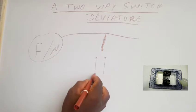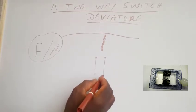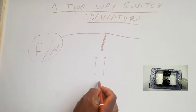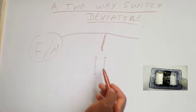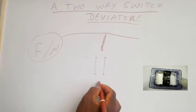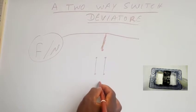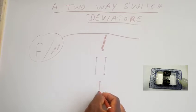You connect those parallel wires to the two holes of the second switch. Then from the last hole — because each switch, as I told you, has three holes — from the last hole you have what we call the return wire, that goes to the lamp.